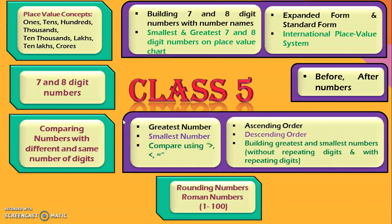Next, under the topic comparing numbers with different and same number of digits, we will learn to identify the greatest number, smallest number, and also compare the numbers using the symbols greater than, less than, and equal to. Once comparison of numbers is done, writing in ascending order and descending order becomes easy. Again, here as in class 4, we will be doing building of the greatest and smallest numbers with the given digits, both with repeating the digits and without repeating the digits.